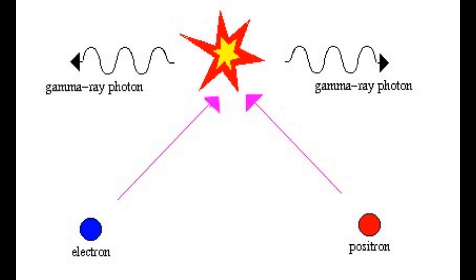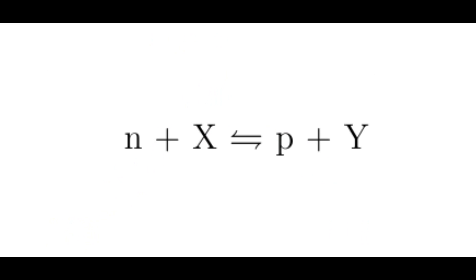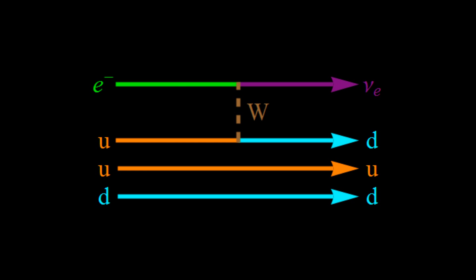Also present at this time were electrons and their antiparticle partner positrons. Positrons have the same mass as electrons, but they have a positive electric charge. It was the electrons, positrons, and neutrinos that allowed protons and neutrons to turn into each other and thus to be in chemical equilibrium. For example, a collision between a proton and an electron could turn the proton into a neutron and the electron into an electron neutrino. A collision between a proton and an anti-electron neutrino could turn the proton into a neutron and the anti-electron neutrino into a positron. Similarly, neutrons could turn into protons by colliding with positrons or electron neutrinos.